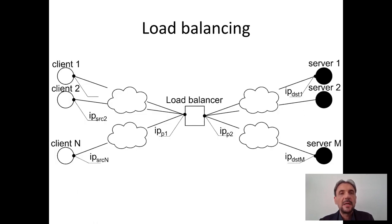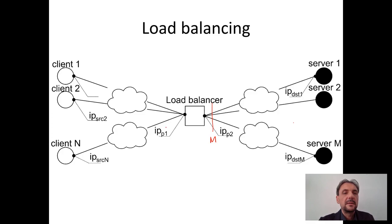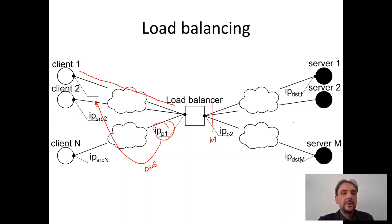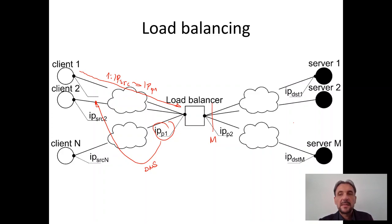Let me briefly discuss how load balancing works. We have a load balancer that serves multiple servers and balances the load between those servers. When the client requests access to the service, it requests an IP address from the DNS server and usually gets the IP address of the load balancer. So the client sees the service through the IP address of the load balancer. Then the client sends a packet with the request for the service, which has the source IP address of the client itself, and the destination is the address of the load balancer. The load balancer then makes a decision about which server to forward the traffic to, based on the load.